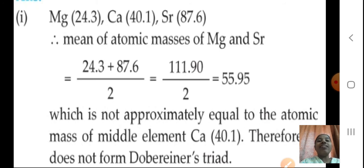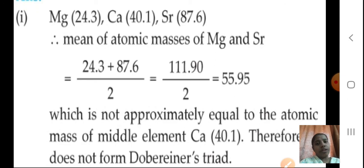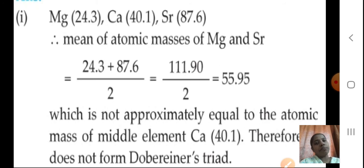A table is also given in your textbook where lithium, sodium, and potassium are taken. When you add the atomic masses of lithium and potassium, you get it equal to the mean which matches sodium. I took one example — magnesium, calcium and strontium — where you saw the limitations of Dobereiner's triad, as they did not follow the rule.